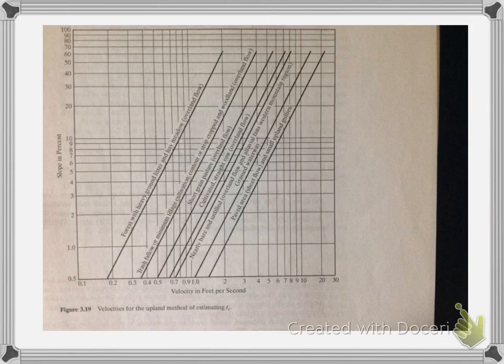For example, if you have a 10% slope and you have contours, you can come and see that your velocity is about 1.7 feet per second. You can plug this directly into the travel time equation to calculate the travel time.